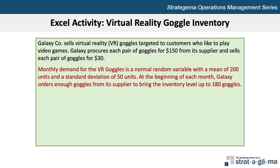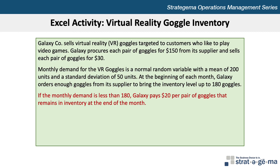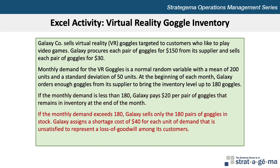At the beginning of each month, Galaxy orders enough goggles from its supplier to bring the inventory level up to 180 goggles. If the monthly demand is less than 180, Galaxy pays $20 per pair of goggles that remains in inventory at the end of the month. If the monthly demand exceeds 180, Galaxy sells only the 180 pairs of goggles in stock. Galaxy assigns a shortage cost of $40 for each unit of demand that is unsatisfied to represent a loss of goodwill among its customers.